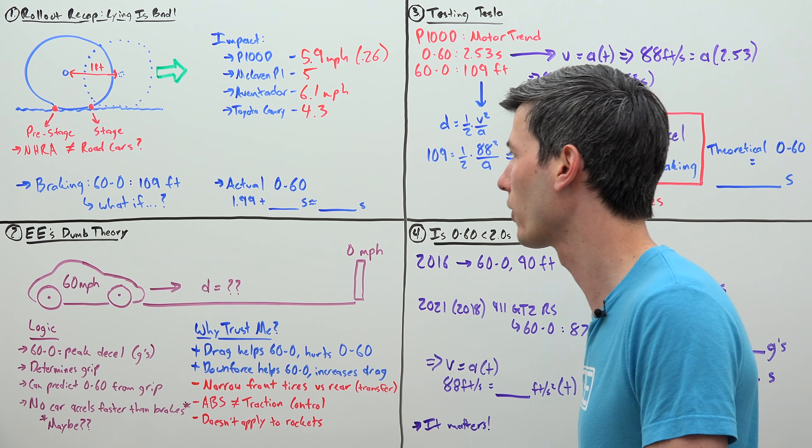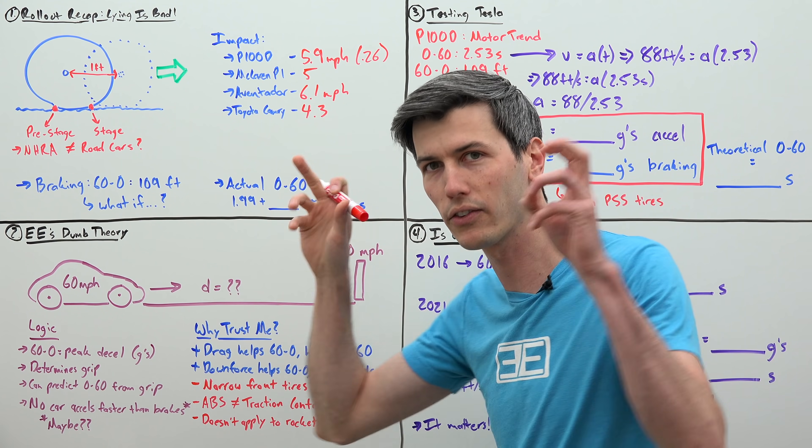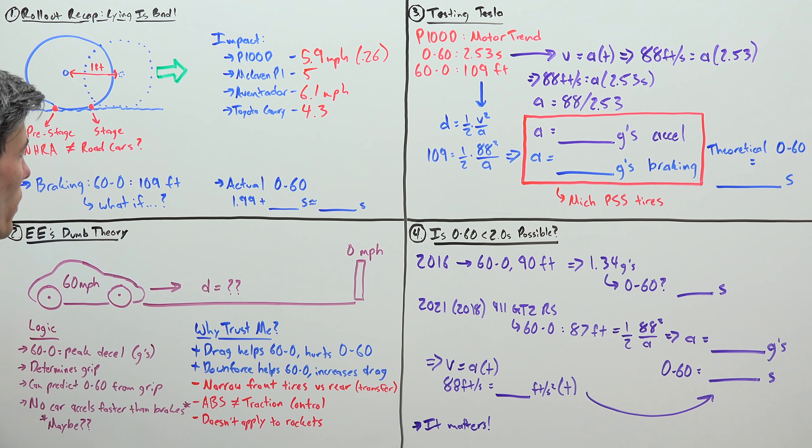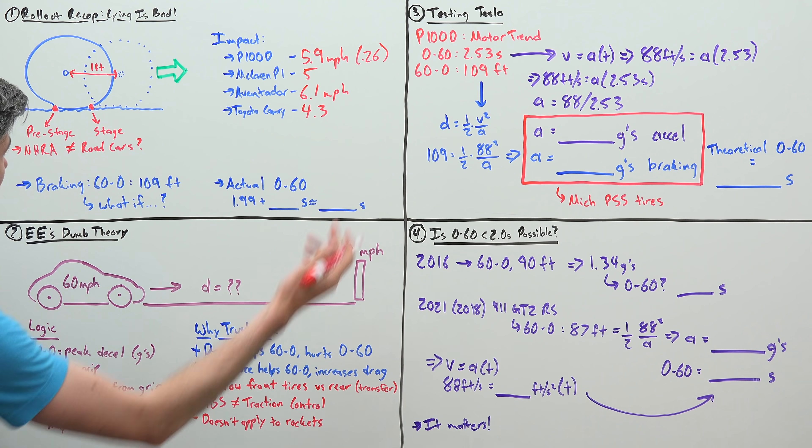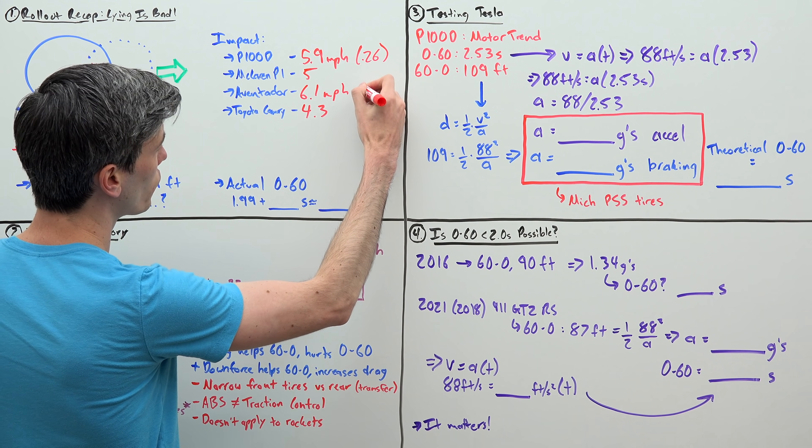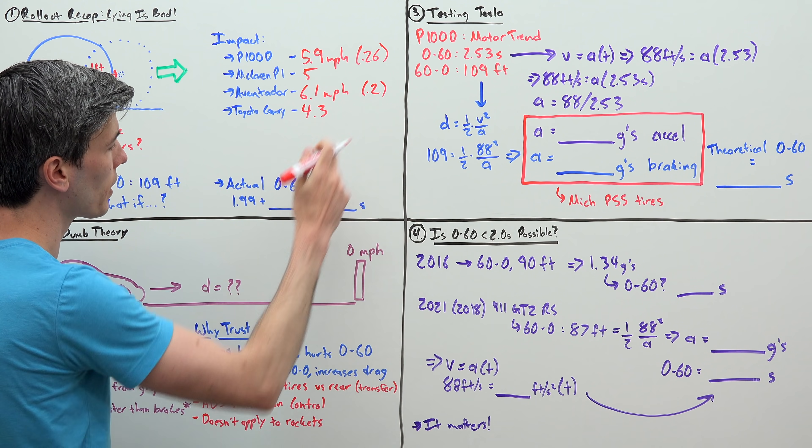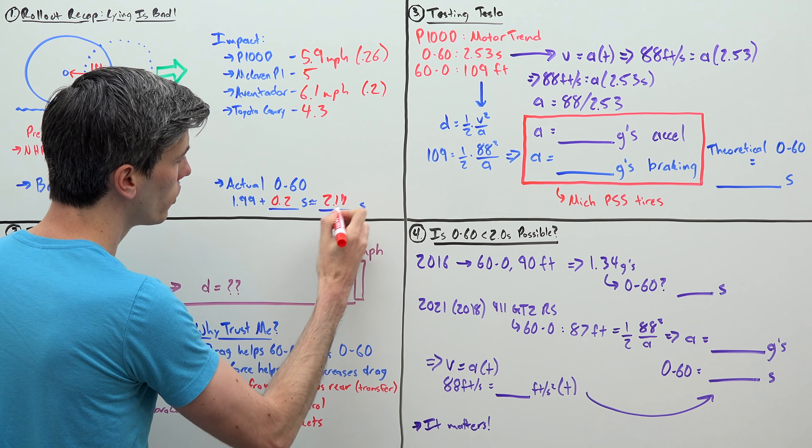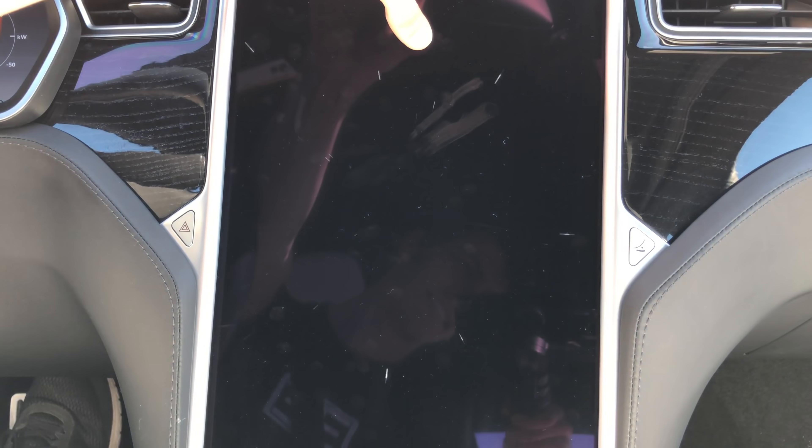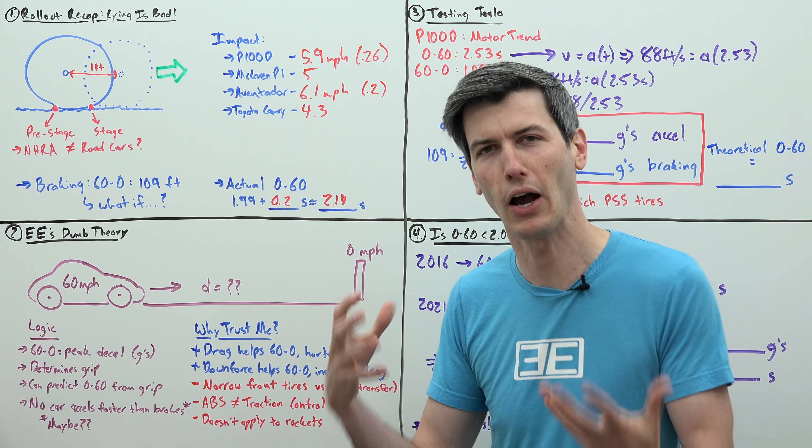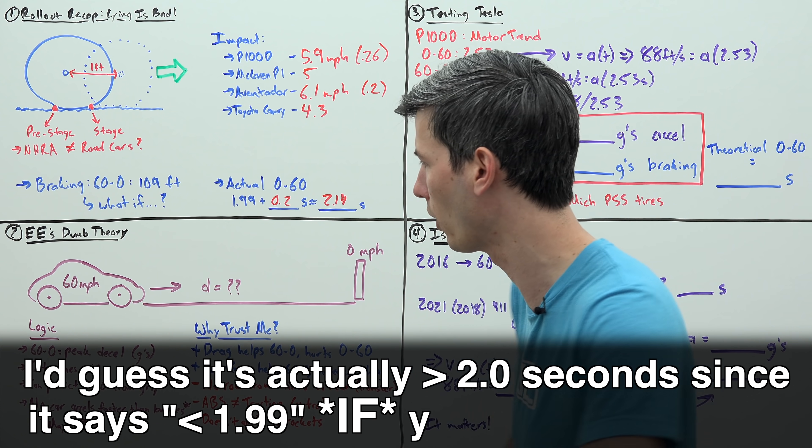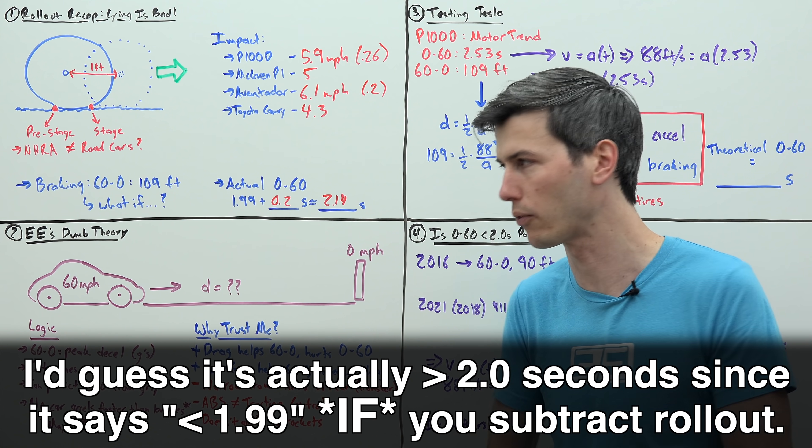So what is the actual 0-60? If Tesla's claiming that removing that first foot of rollout, they're able to get 1.99 second 0-60, well, best case like this Aventador, that shaved off 0.2 seconds from its time. So let's say something like 0.2, and suddenly our 0-60 in reality is more like 2.19 seconds. Now, is it possible for the true 0-60 to be under 2 seconds?